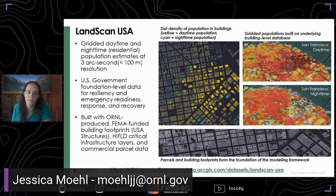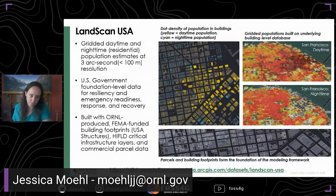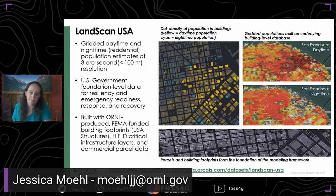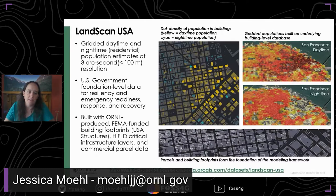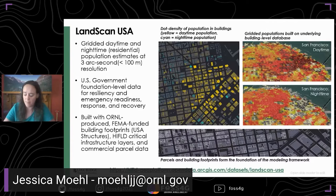We build this with an ORNL-produced, FEMA-funded building footprint layer called USA Structures. We also use high-field critical infrastructure layers for some of our component models, like schools and prisons. We also have commercial parcel data. Those are the big datasets that we're using. The map in the middle of the screen is dot density population in the buildings that we're using underneath these gridded raster datasets. We've started modeling at the building level and can make these cool density population maps, so we're pretty excited about it.